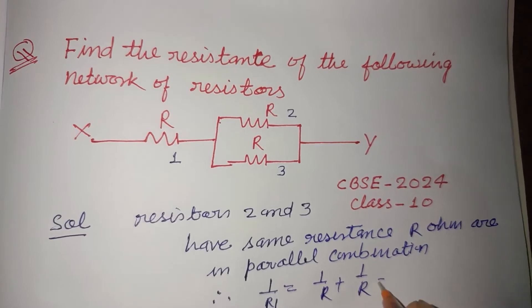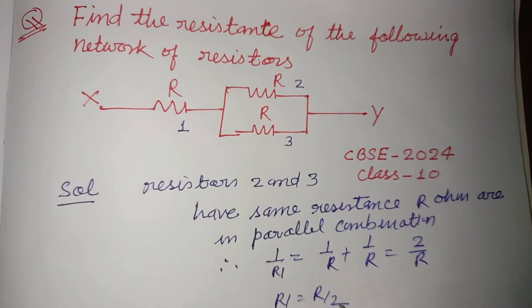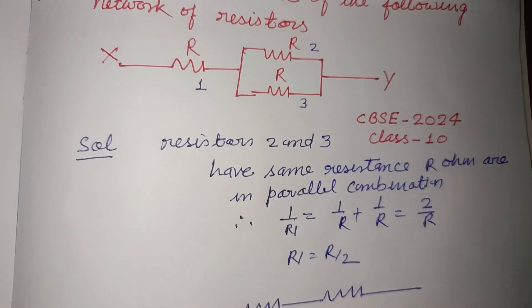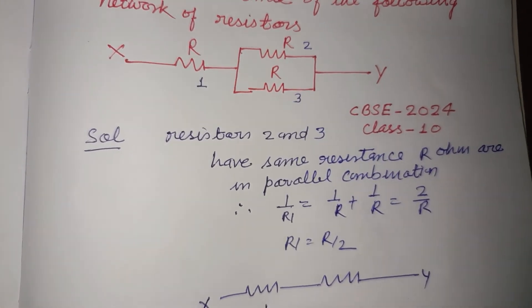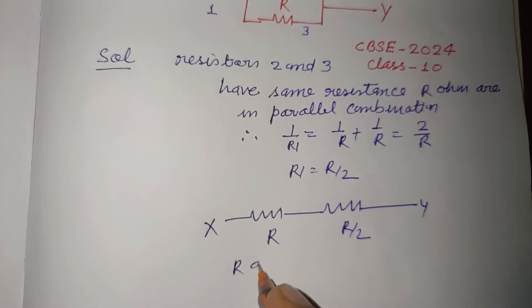upon R plus one upon R. This is two upon R, therefore R1 equals R/2. Now the circuit will come in this way: this is X, this is Y, and this is R and this is R/2. Now R